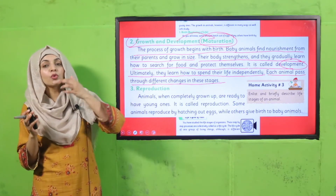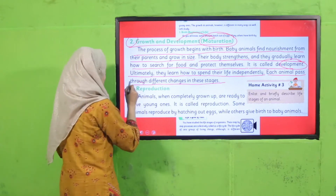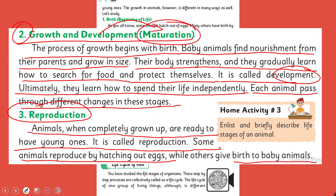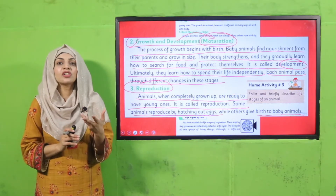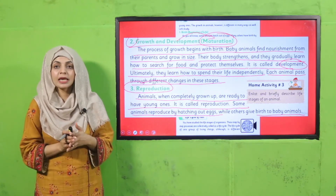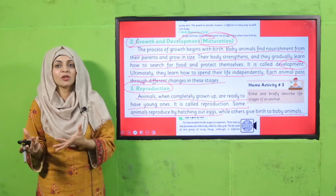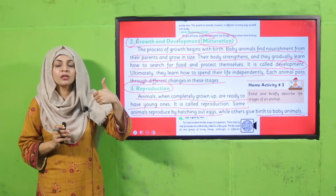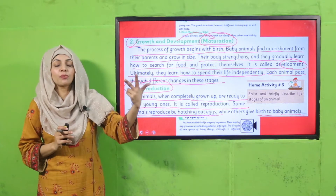When they finally get matured, they move to the next stage, which is called the reproduction stage. Animals, when completely grown up, are ready to have young ones — it is called reproduction. Some animals reproduce by hatching out eggs while others give birth to baby animals. When they are totally matured and grown up, they are ready for the reproduction stage, where they either lay eggs or give birth to live animals. These are the three phases of the animal life cycle: birth, growth and development, and reproduction.